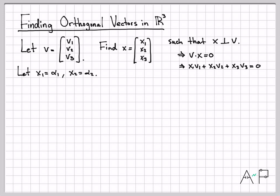If I move these two components to the other side of the equation, that says that x3·v3 has to equal negative x1·v1 minus x2·v2. So if I pick some values for x1 and x2 on the right side of the equation, that then tells me what I have to set x3 on the left side to make the two sides equal.